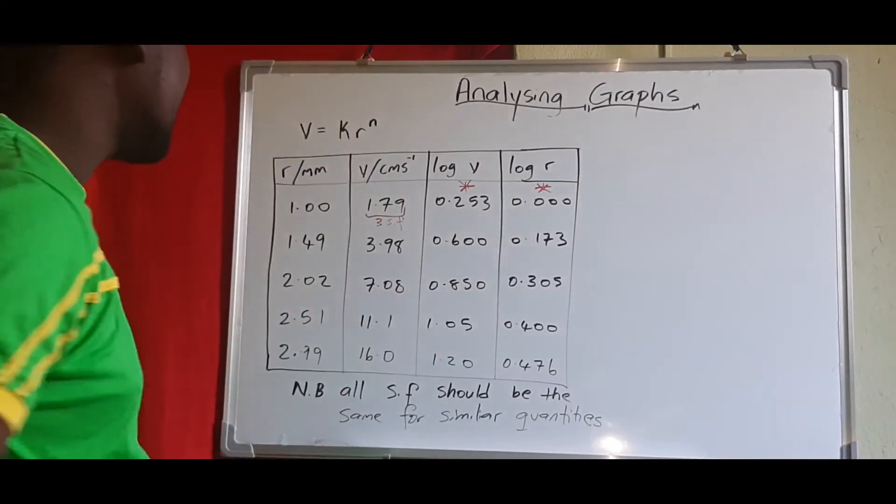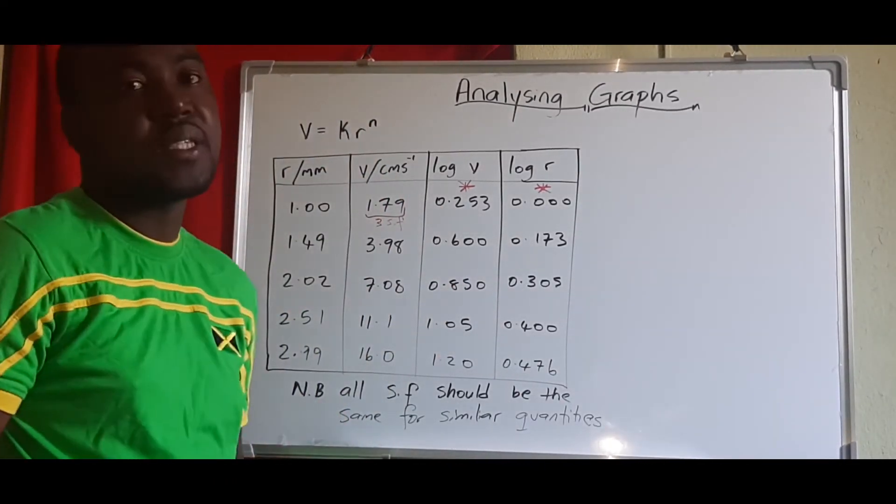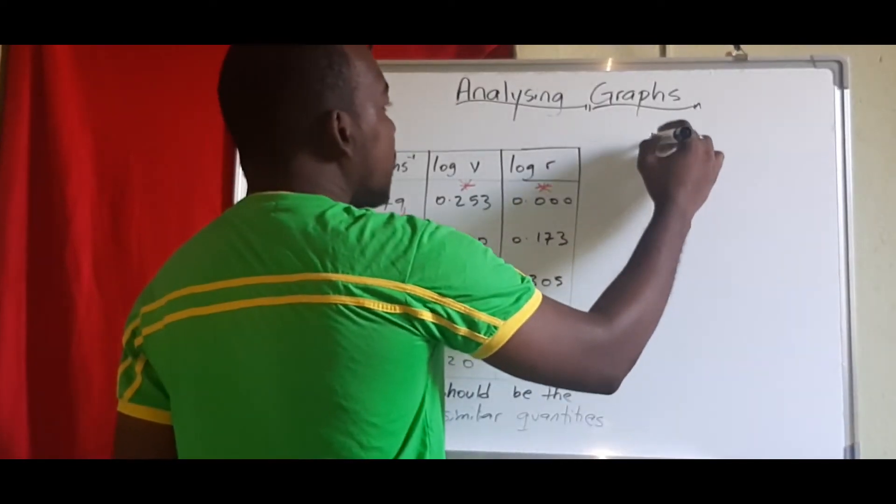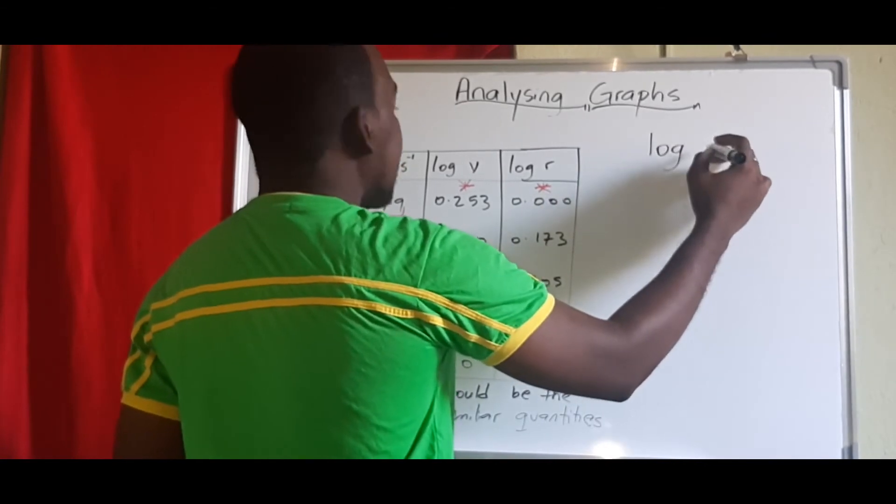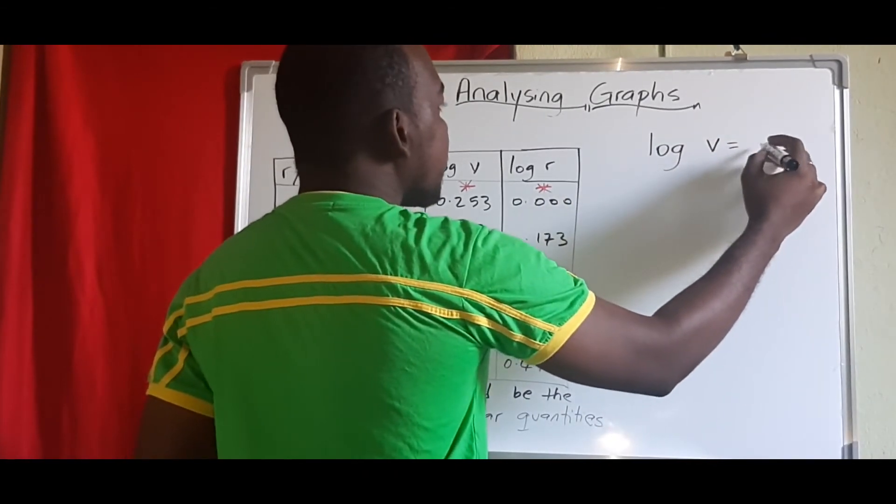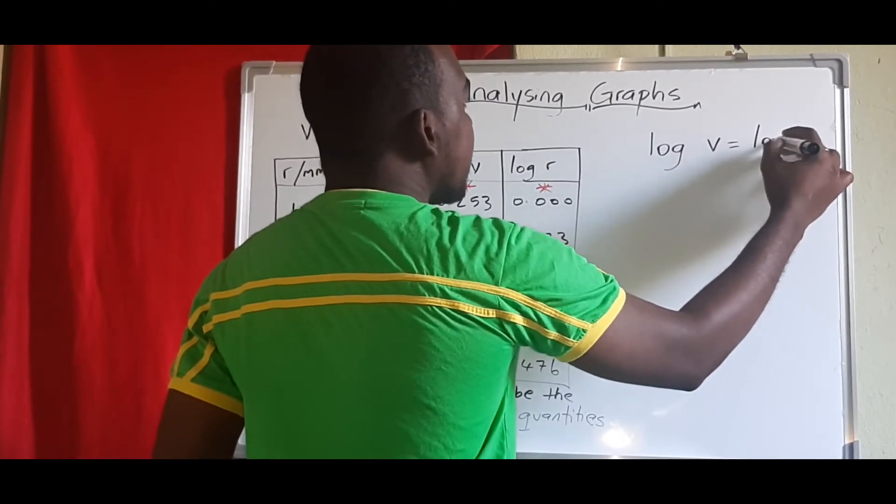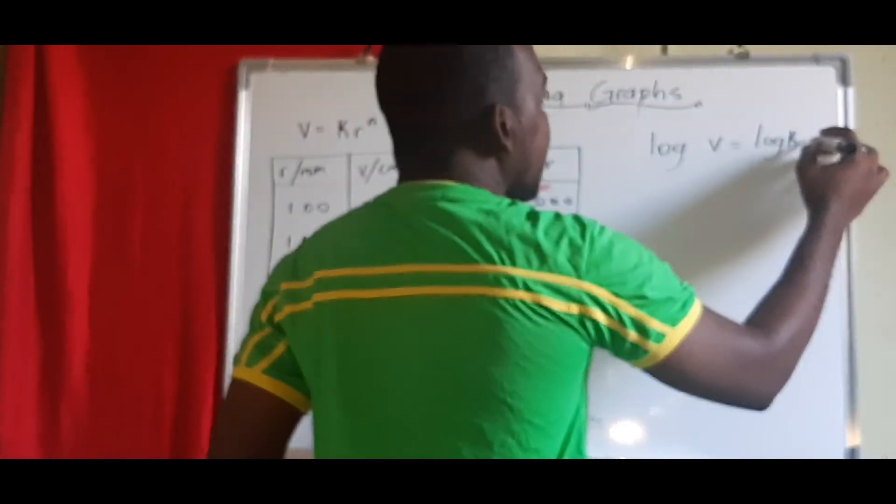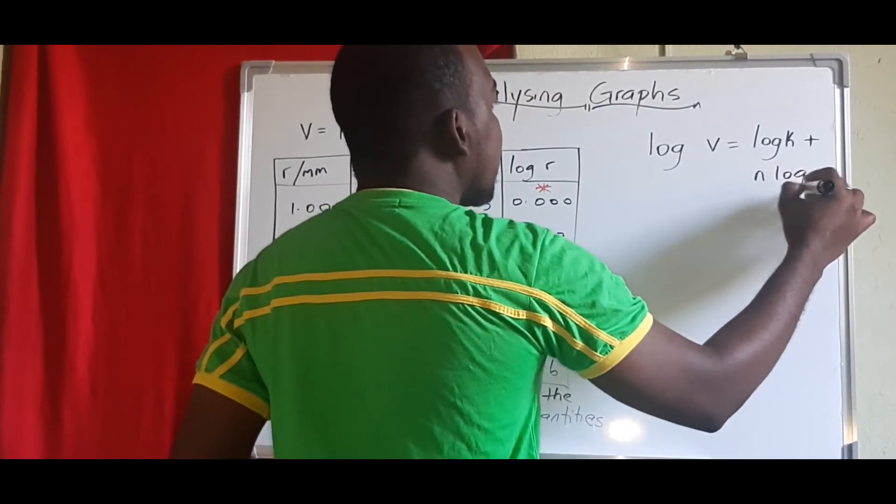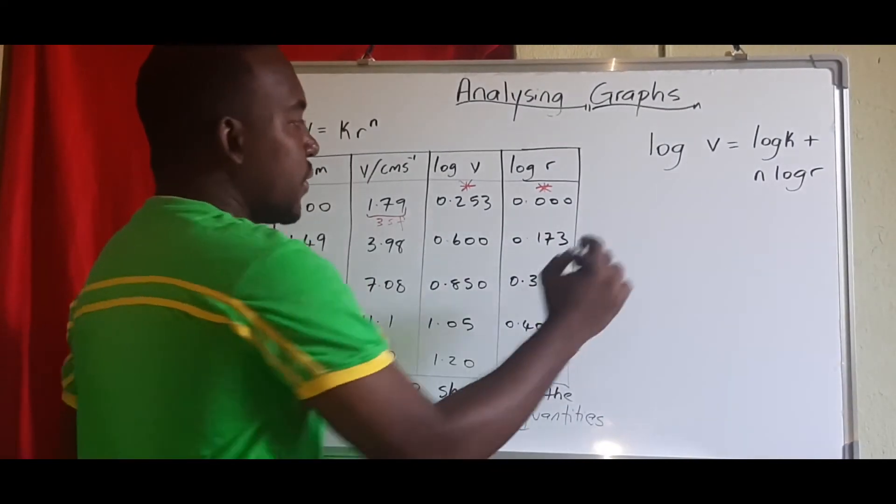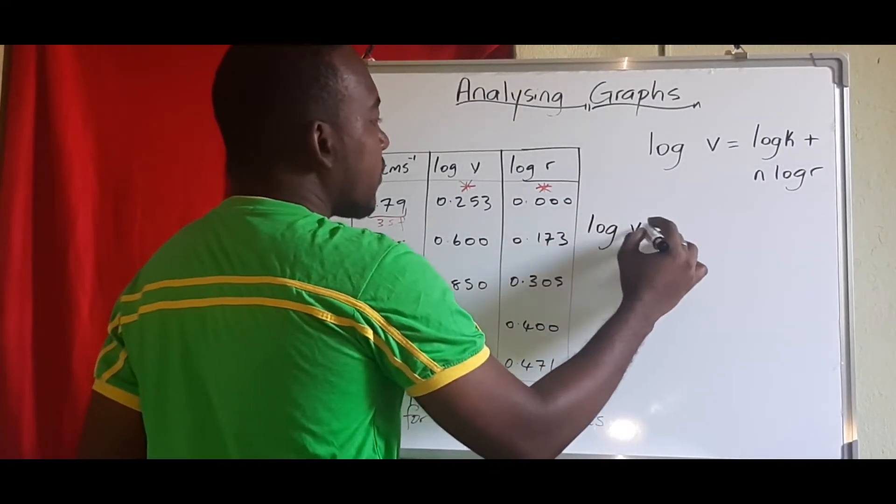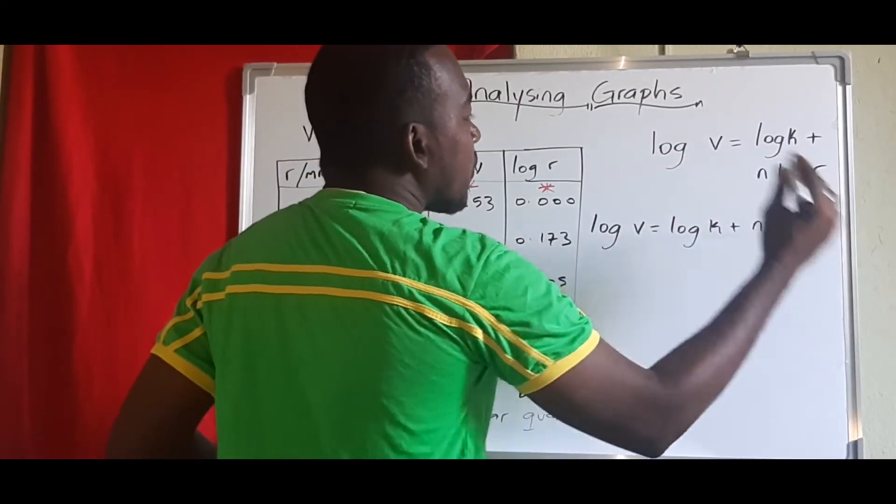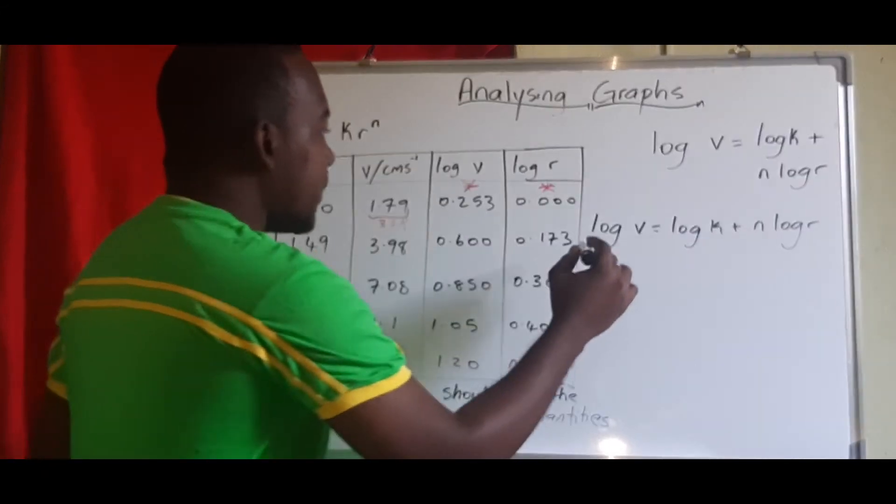So now let's look at manipulating that equation to give us a straight line equation. So in this case, the first thing we'll do is to log both sides. So we'll get log v would be equal to log k, and because it's multiplied by r, then we get plus n log r. So if we write this here, so that's what we get.